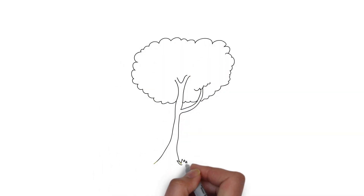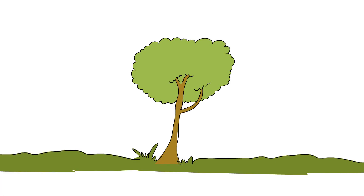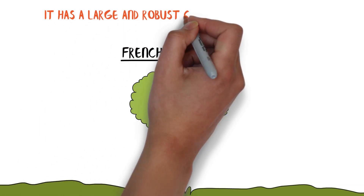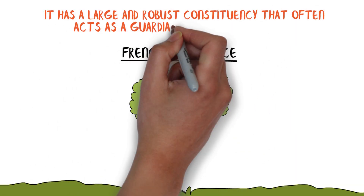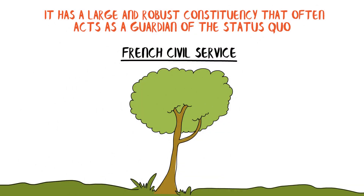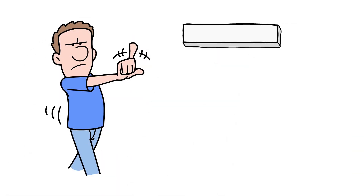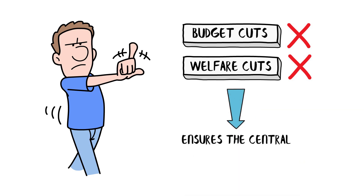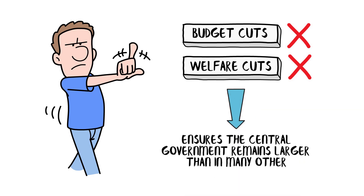The mighty civil service: let's turn our attention to the role of the civil service in French politics. Imagine a giant, deeply rooted tree in the middle of a garden — that's the French civil service. It has a large and robust constituency that often acts as a guardian of the status quo. Their opposition to budget or welfare cuts is as fierce as a French chef defending the integrity of traditional cuisine, ensuring the central government remains larger than in many other countries.